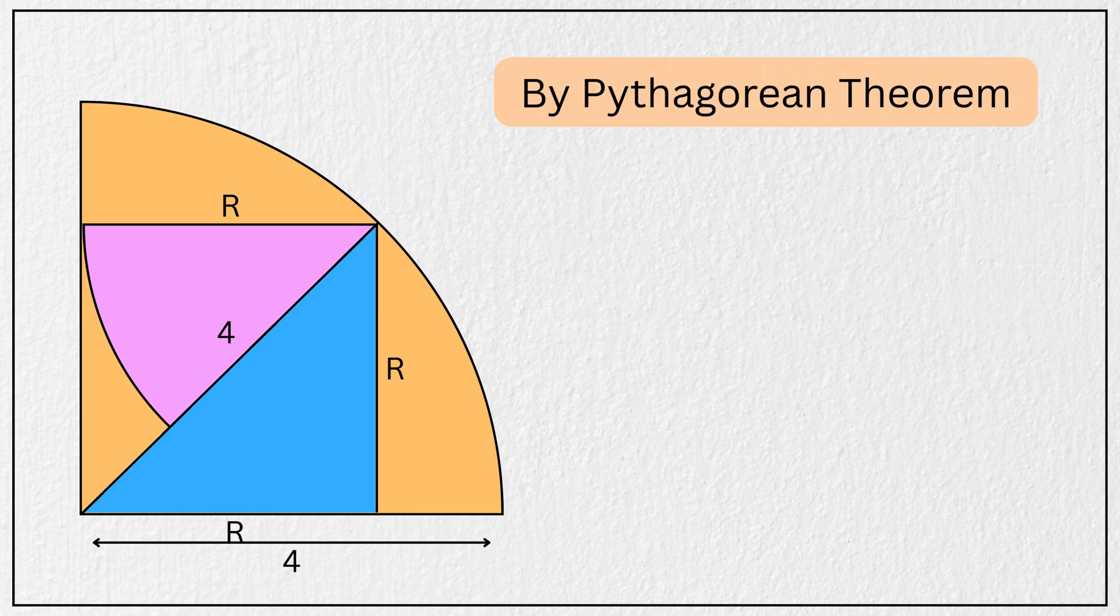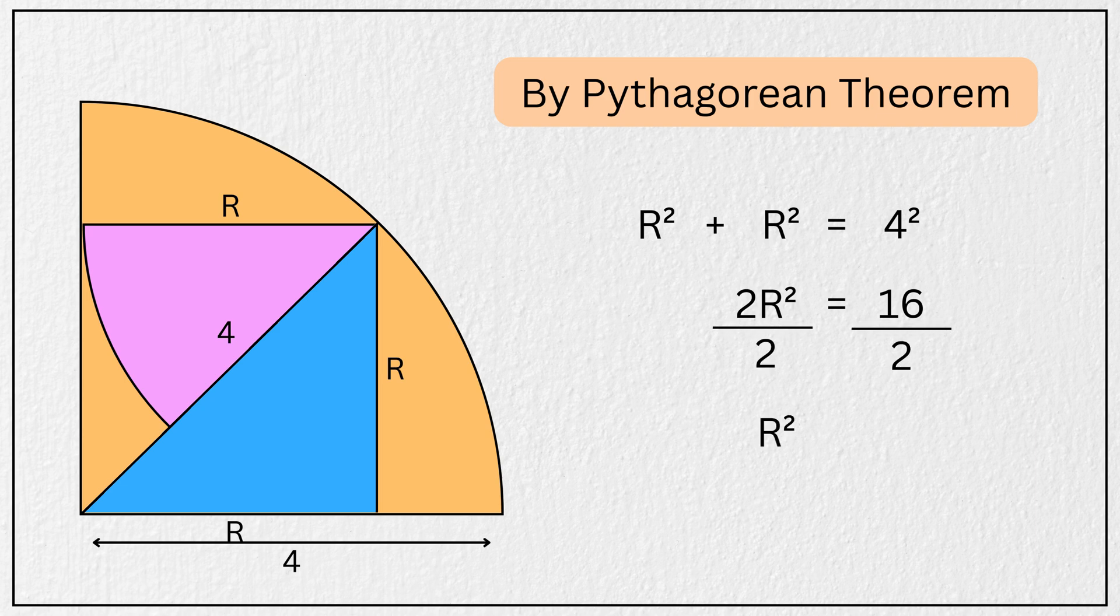So using everyone's favorite Pythagorean theorem, we have R squared plus R squared equals 4 squared. Simplifying this we get 2R squared equals 16. Now dividing both sides by 2, we have R squared equals 8.